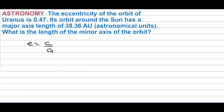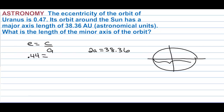Eccentricity is 0.47. The major axis length is 38.36, so 2a equals 38.36, meaning a equals 19.18. Note: this should be 0.47, not 0.44. So 0.47 equals c over 19.18.